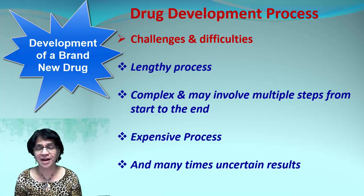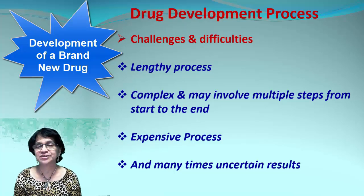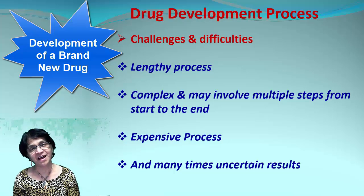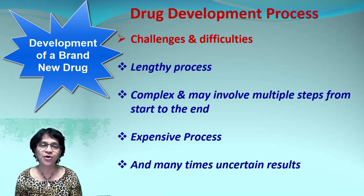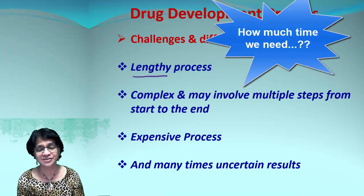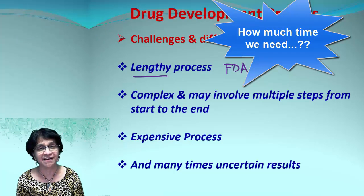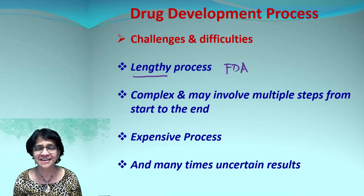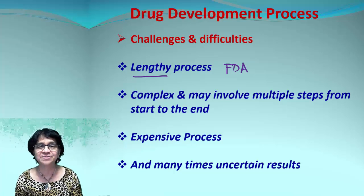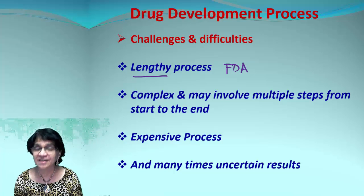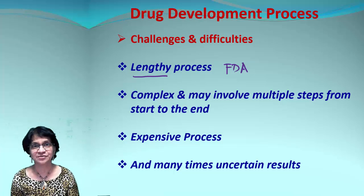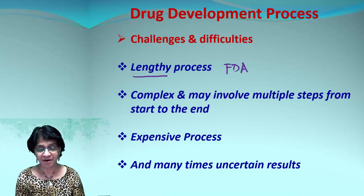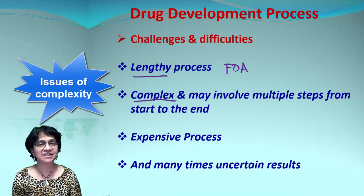If you want to make a new drug — a brand new medicine — you have to start from the lab. The process begins with finding the lead compound in the lab, then synthesis, going all the way through a lengthy process to finally reach FDA approval. That's a long process that may take not just months, or one or two years, but sometimes even 10 to 15 years.